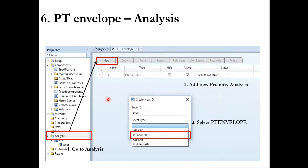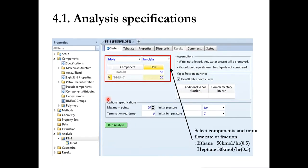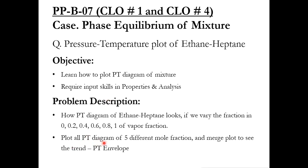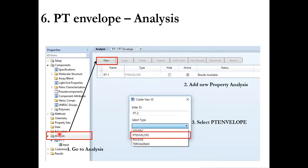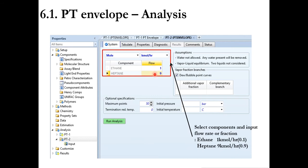Coming back to Problem Number 2, which is related to plotting the PT diagram for five different mole fractions and then merging those plots. You go to analysis, develop another PT envelope, and for the first case you take it as 1 and 9 — meaning a total flow rate of 10, with 1 mole for ethane and 9 moles for heptane, so the mole fraction of ethane is 0.1 and heptane is 0.9. Generate the plot.